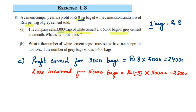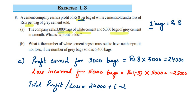Now we have to find the total profit or loss by adding the total profit and loss together to see if we're getting a profit or loss overall. Total profit or loss equals 24,000 plus (minus 25,000). Since plus and minus gives minus, it becomes 24,000 minus 25,000. When adding two integers with different signs, we subtract them.